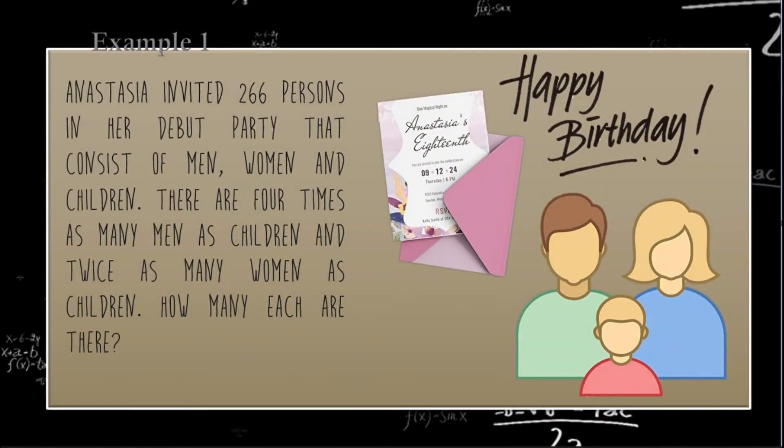Now, let's have an example. Anastasia invited 266 persons in her debut party that consists of men, women, and children. There are four times as many men as children and twice as many women as children. How many each are there?